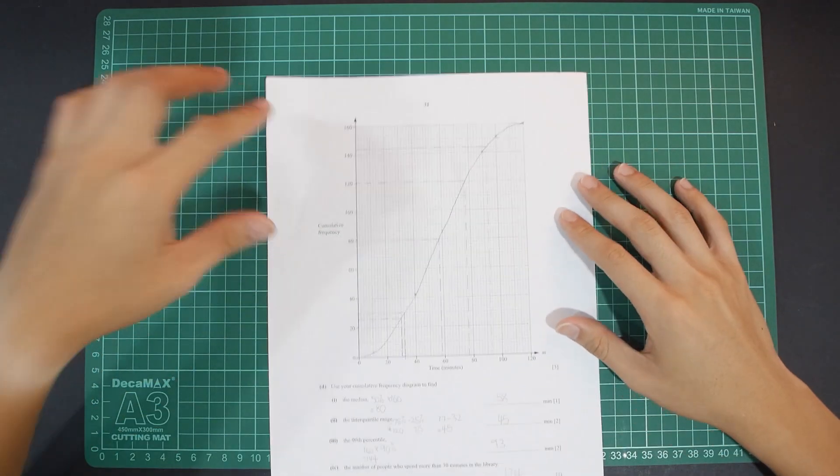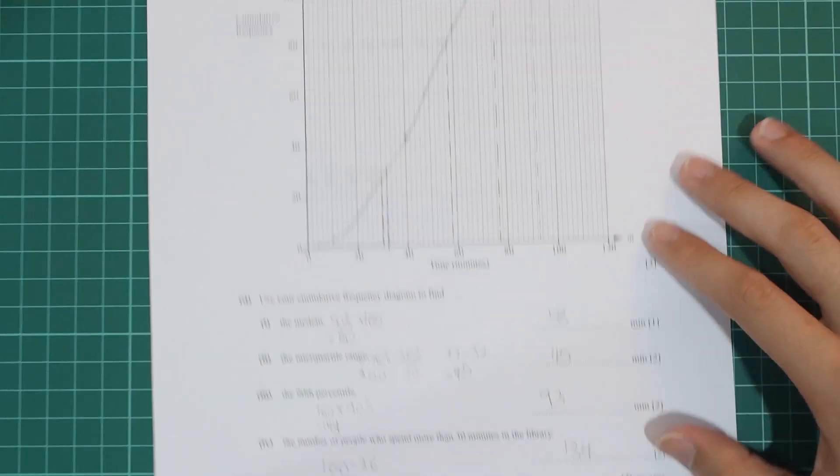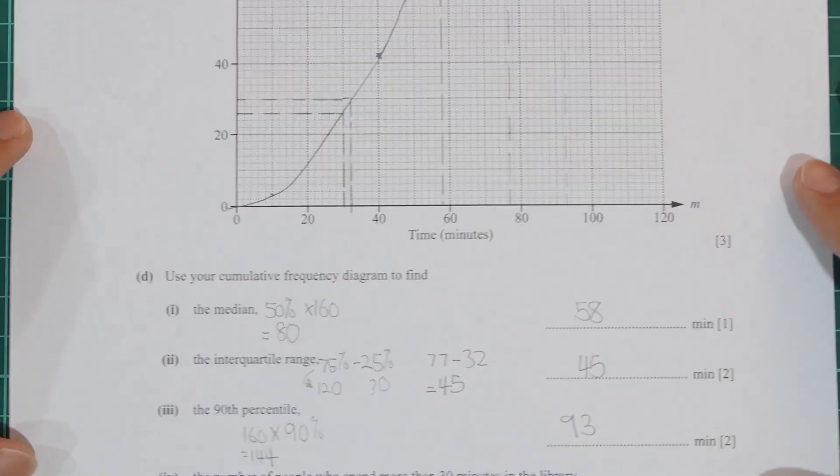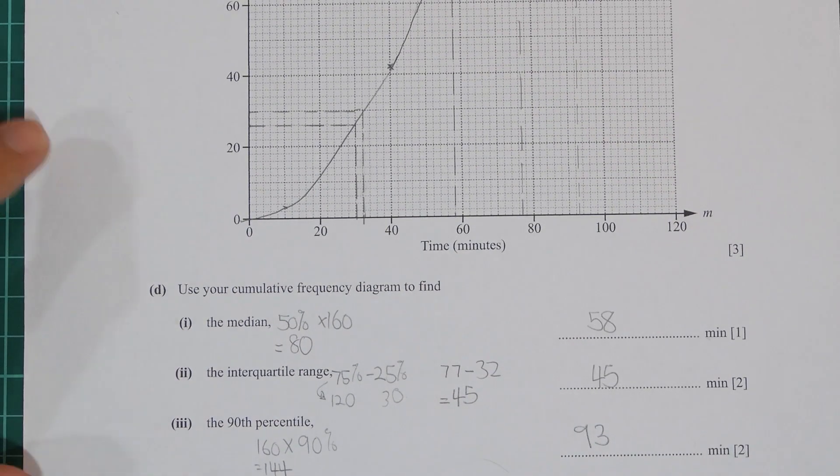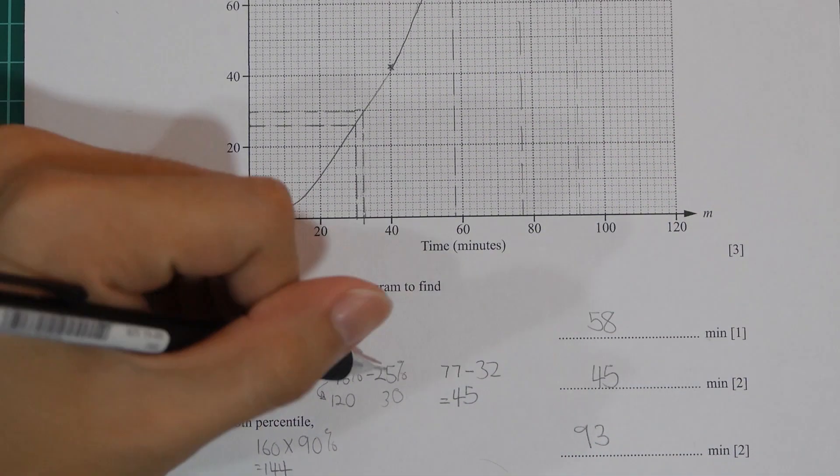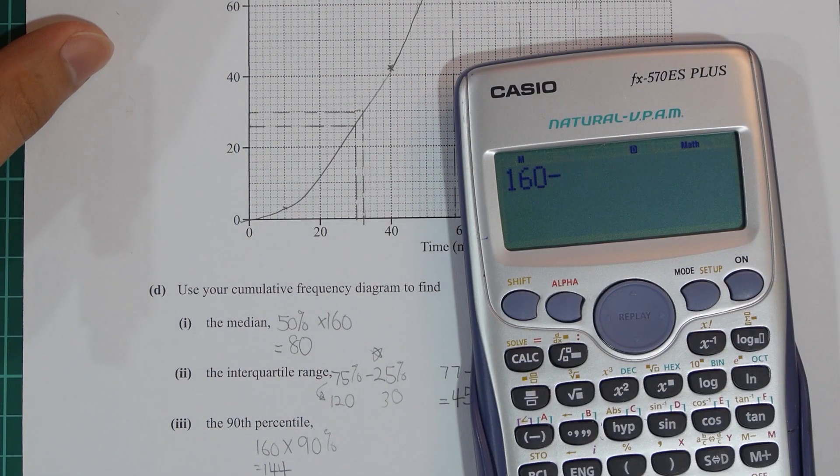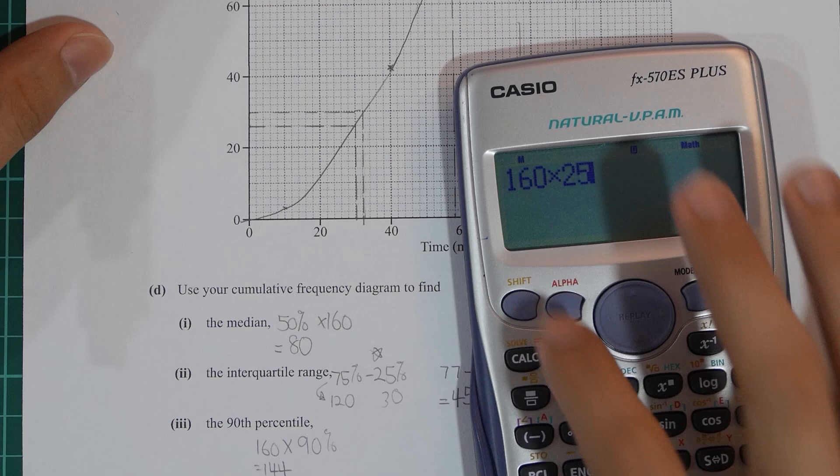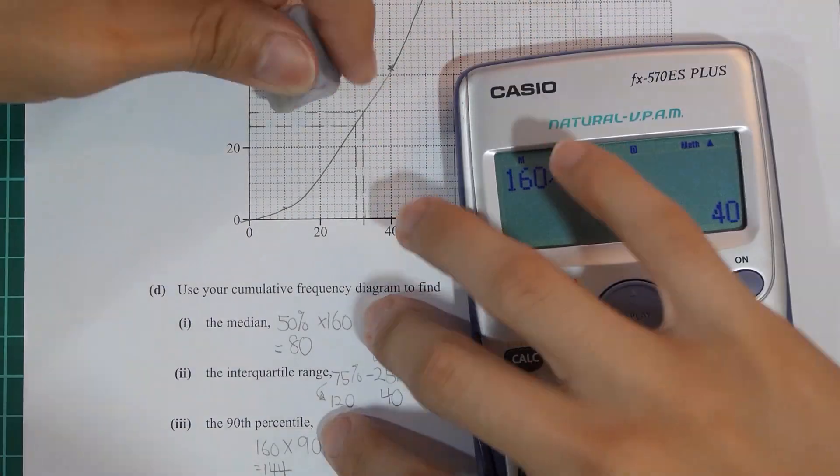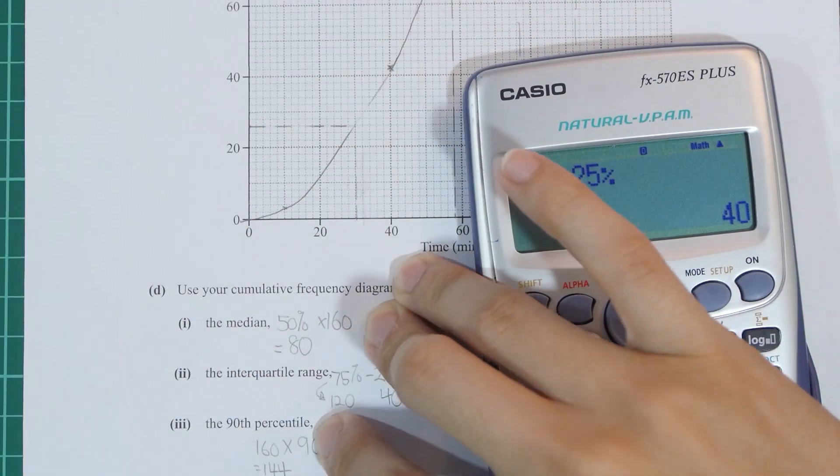The next question we're discussing today is 7D part 2. For this part, I made a mistake on the 25%. If you take 160 times 25%, you will get 40. However, I took 30 instead.